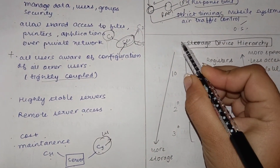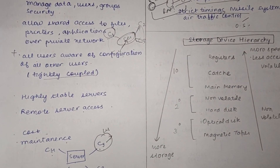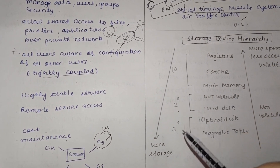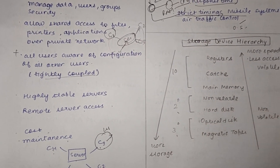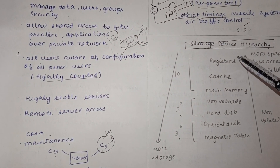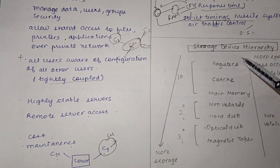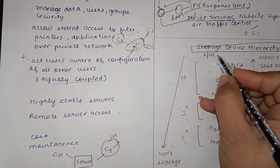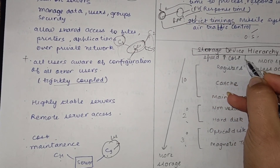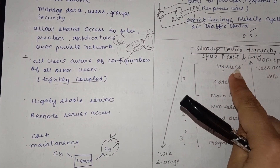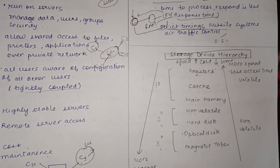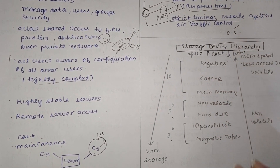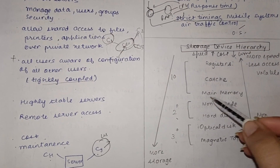The storage device hierarchy classifies storage in a computer system into primary, secondary, and tertiary storage. At the top of the hierarchy, devices have maximum speed, minimum access time, and maximum cost. At the top we have registers, which are located inside the CPU — being closest to the CPU means data can be accessed very quickly. As we move down the hierarchy, storage capacity increases while cost and speed change accordingly.